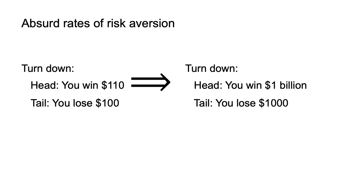Suppose a person who acts consistent with expected utility theory always turns down a 50-50 bet to win $110 or lose $100, whatever their wealth. That person will also turn down a 50-50 bet to win $1 billion, lose $1,000. Another expected utility maximiser turns down a 50-50 bet to win $11, lose $10 at all levels of wealth. That person will turn down any 50-50 bet where they could lose $100, no matter the upside.